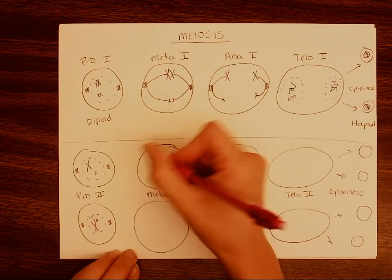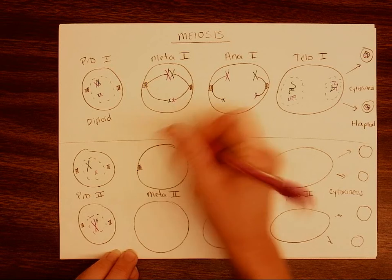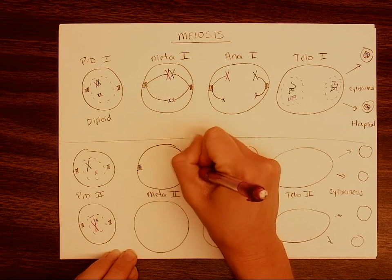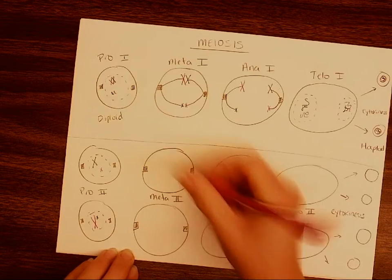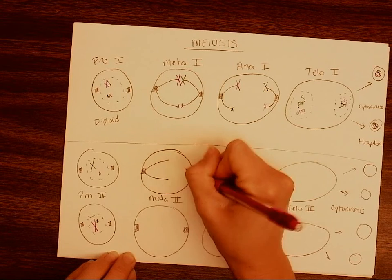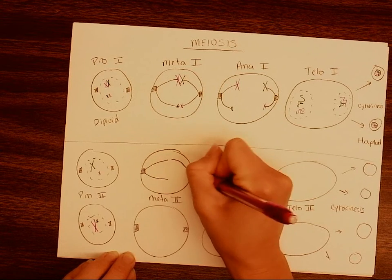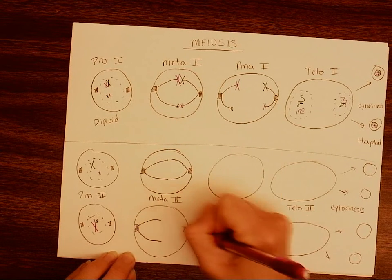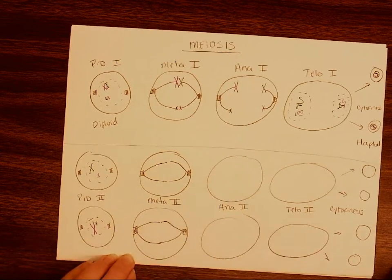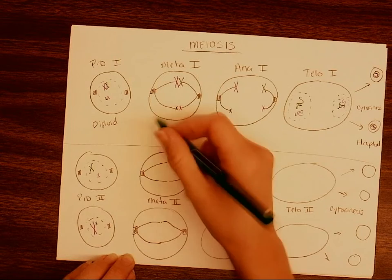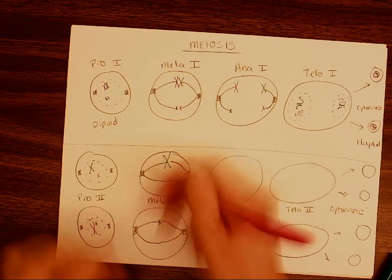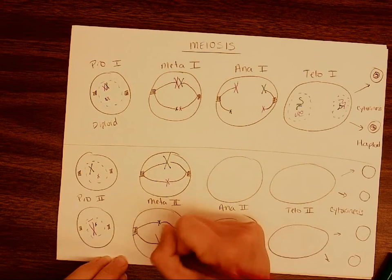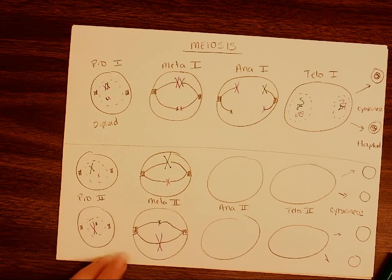With metaphase II, these chromosomes are going to be pulled to the middle of the cell — meta means middle — and they're going to be pulled there by the spindle fibers made from our centrioles. So I'm putting these near the middle: a big green, a little green, a little pink, and a big pink in the middle of the cell.